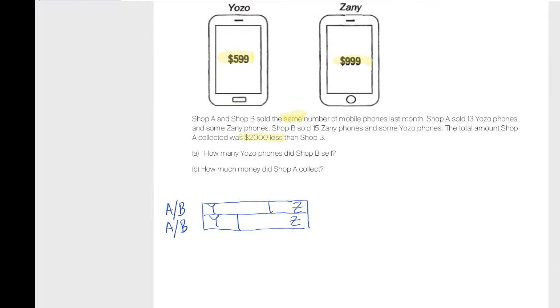The very important thing is they sold the same number, but A collected less. Which is more expensive here, Yozo or Zeny phones? Zeny. Zeny phones are more expensive. If A collected less than B, who sold more Zeny phones? B sold more Zeny phones. Very good. Shop B collected more money, so therefore, Shop B must have sold more Zeny phones because Zeny phones are more expensive.